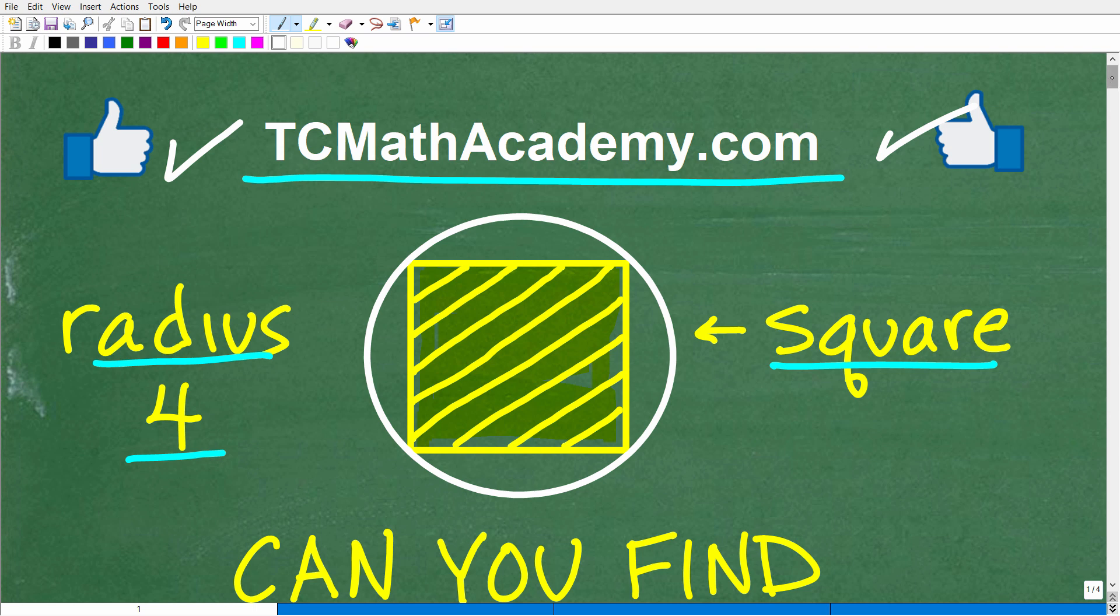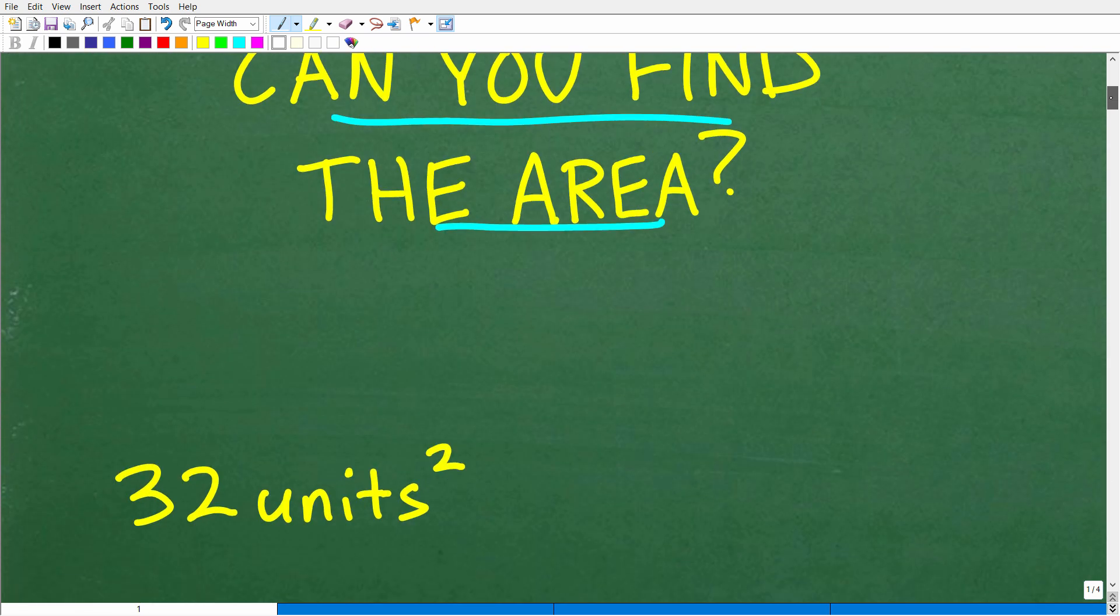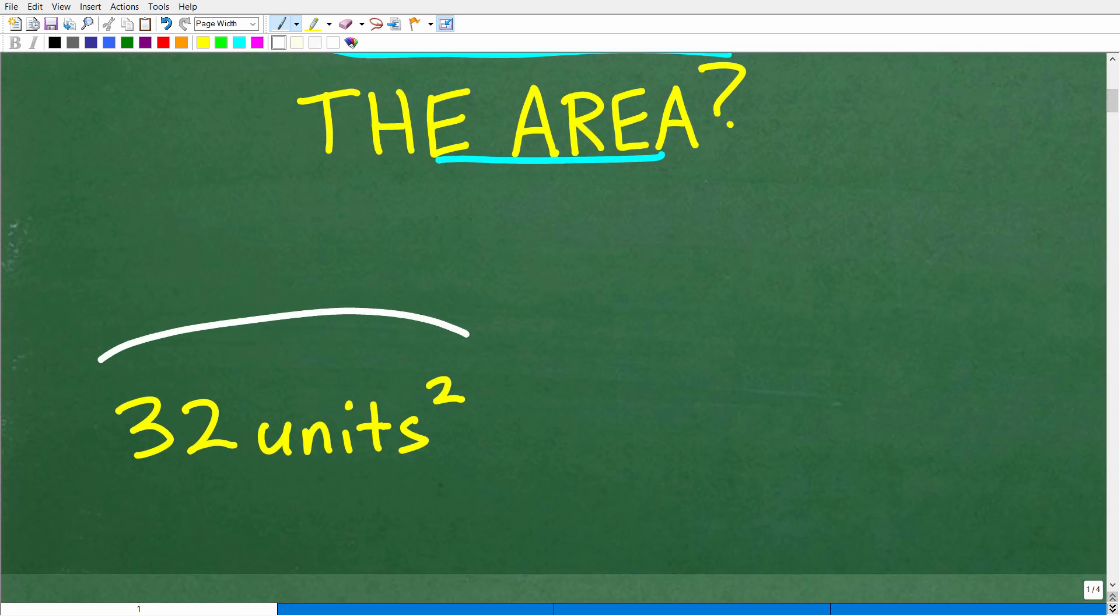Okay, so let's go ahead and take a look at the answer. Again, we're trying to find the area of this square that's inscribed in this circle. The only thing we know is that the radius of the circle is 4. Well, the correct answer is 32 units squared.